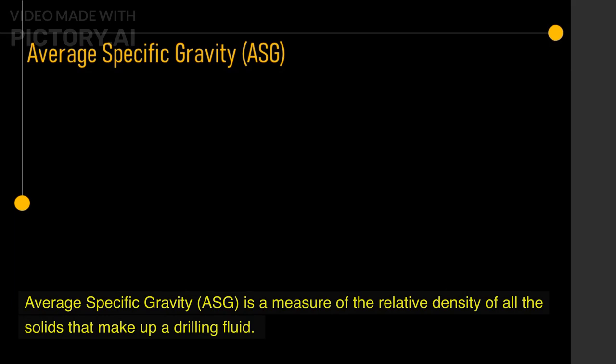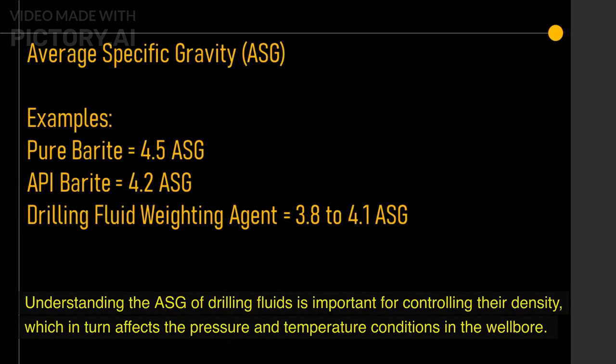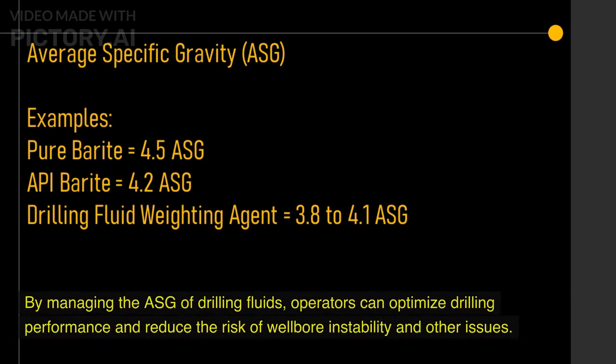Average specific gravity, ASG, is a measure of the relative density of all the solids that make up a drilling fluid. Understanding the ASG of drilling fluids is important for controlling their density, which in turn affects the pressure and temperature conditions in the wellbore. By managing the ASG of drilling fluids, operators can optimize drilling performance and reduce the risk of wellbore instability and other issues.